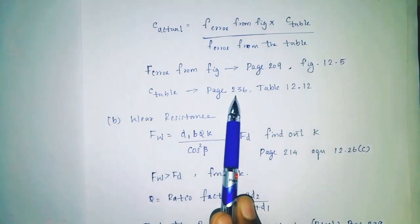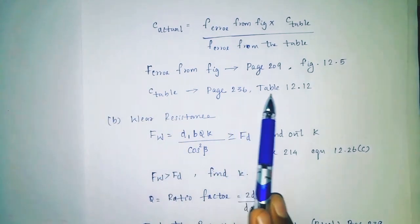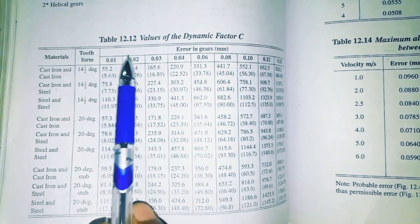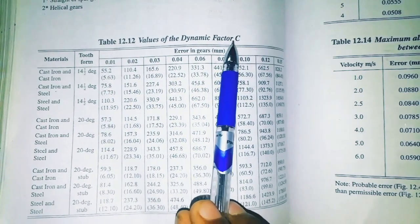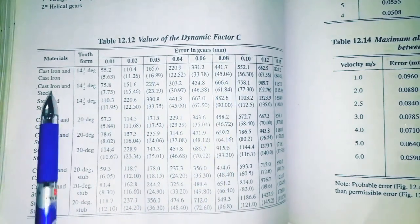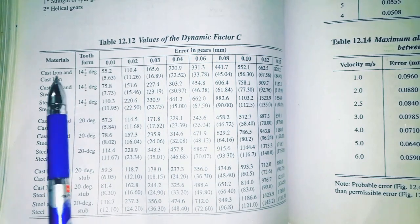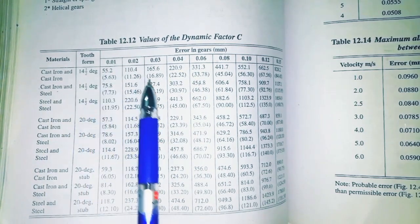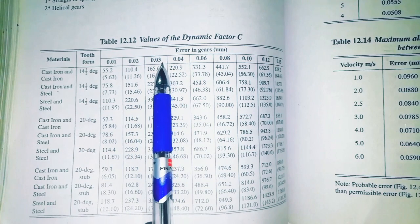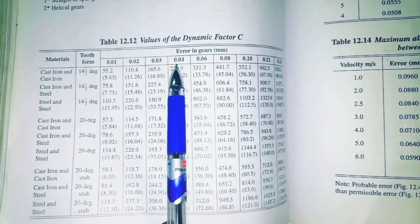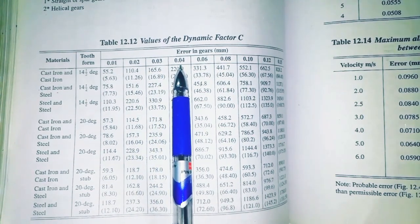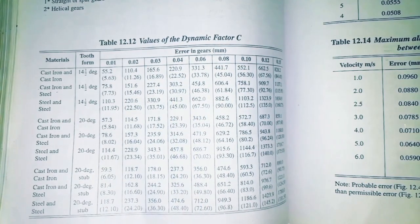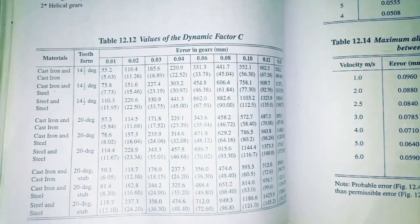C table is from page number 236, table 12.12 — dynamic factor C. For cast and cast material with 14.5 degree tooth form, C = 0.035. For 20 degree tooth form, C = 0.04. For other combinations, C = 0.045.